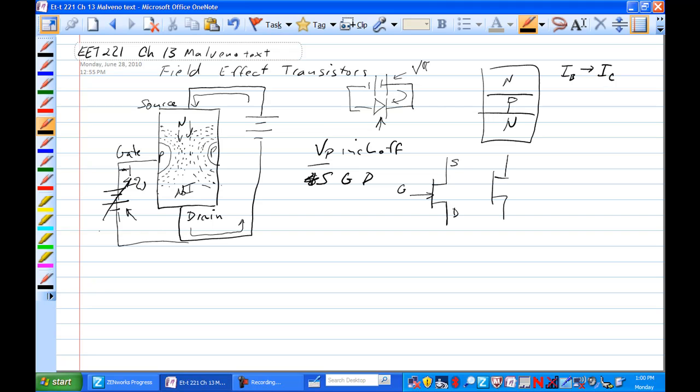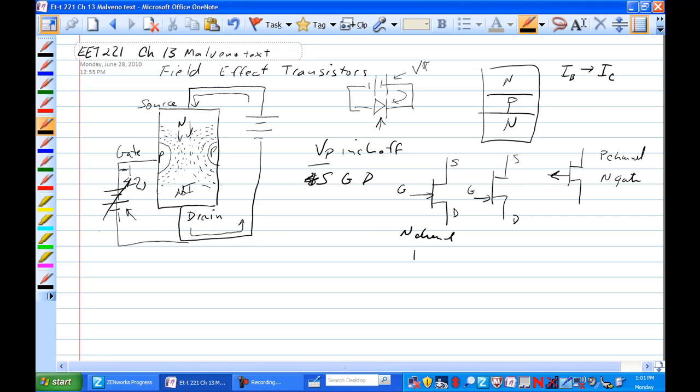Another symbol you might see would be like this, source, gate, and drain. You also might see a symbol that looked like this with the arrow pointing out. This one has a P channel and an N gate. This one has an N channel and a P gate.